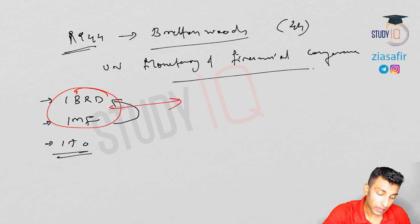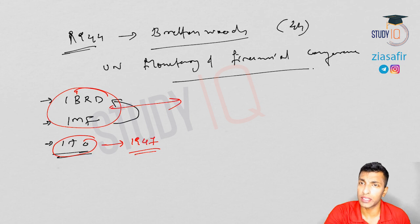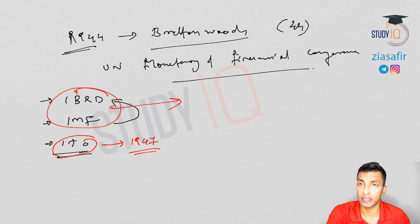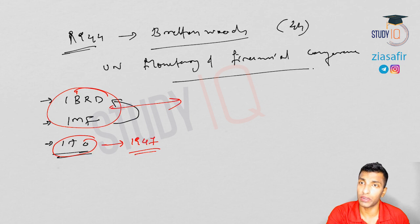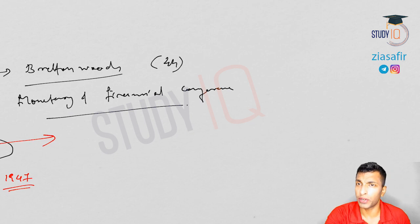These two — IBRD and IMF — are the Bretton Woods twins. Instead of ITO, in 1947 another meeting was held in Geneva, attended by 23 countries, where they signed GATT — General Agreement on Tariffs and Trade. GATT became operational in 1948 and ran through the Uruguay Round until 1994, when the Marrakesh Agreement led to WTO coming into existence from 1995. WTO is expected to feature in both mains and prelims questions.